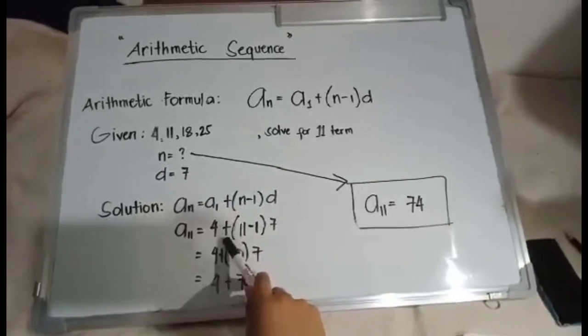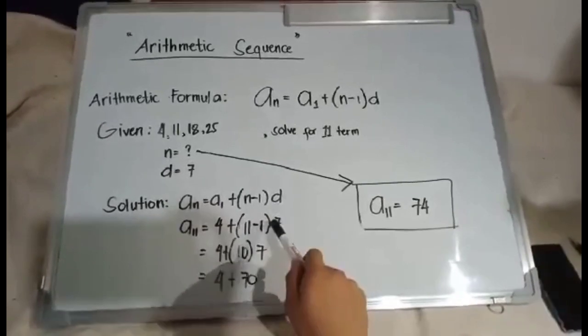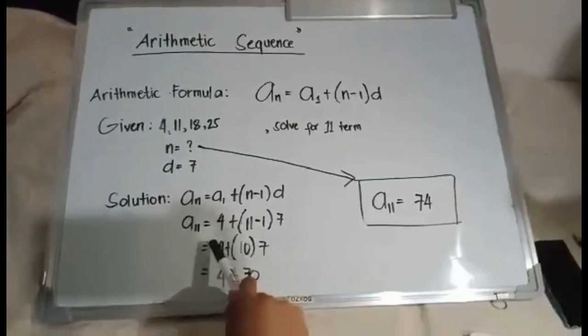So plus our number of terms, 11 minus 1, and our common difference is 7.